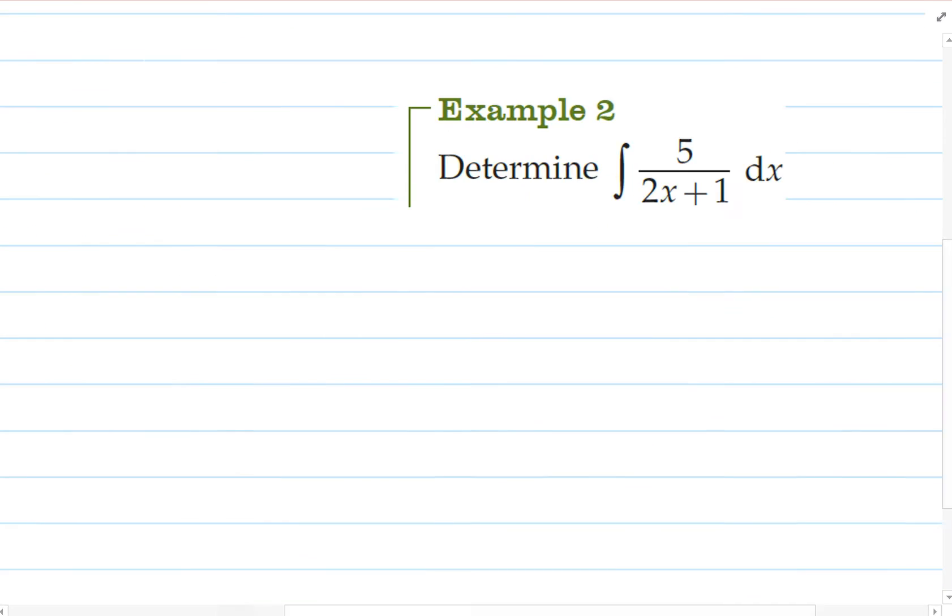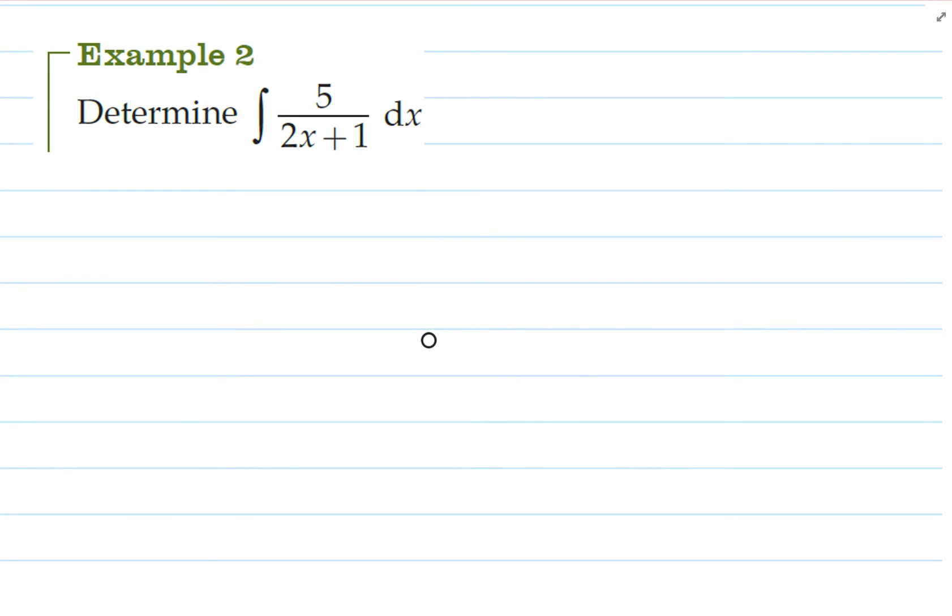Okay, for question 2, we have to consider a little bit what happens with this 2. But first of all I'm going to write this as 5 times 1 over 2x plus 1.